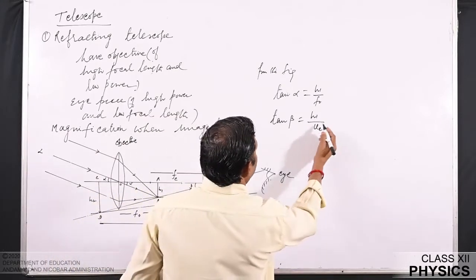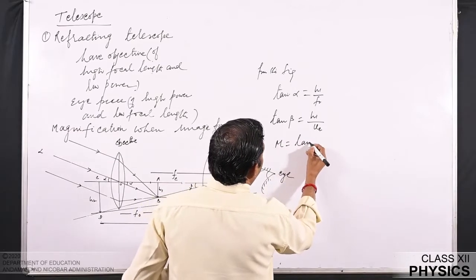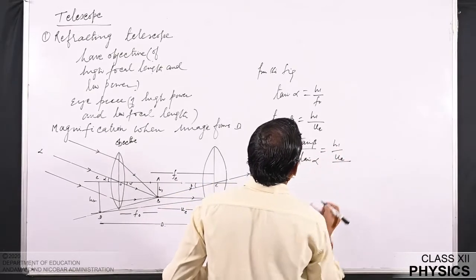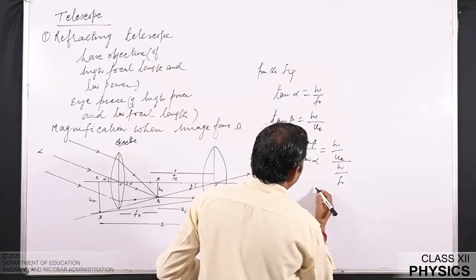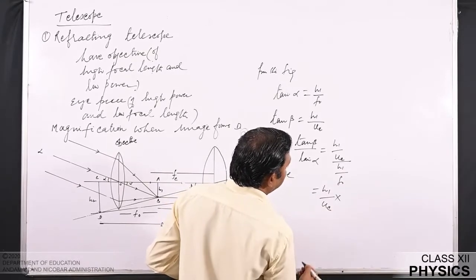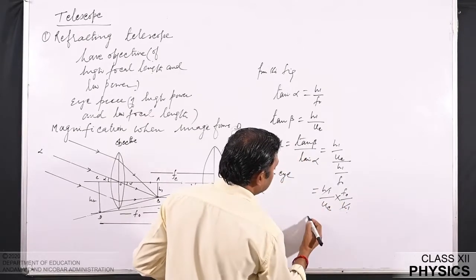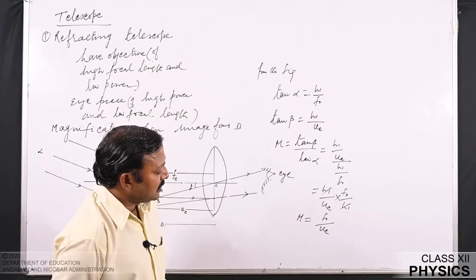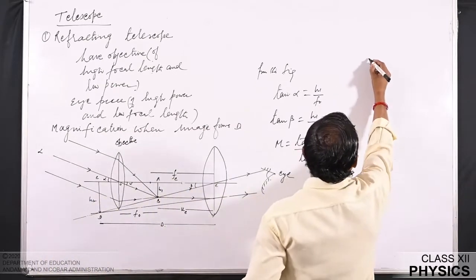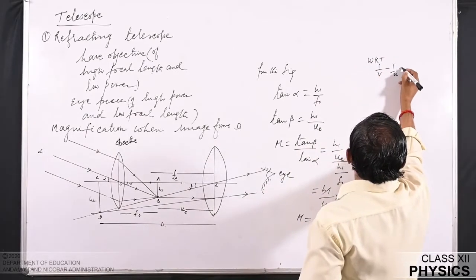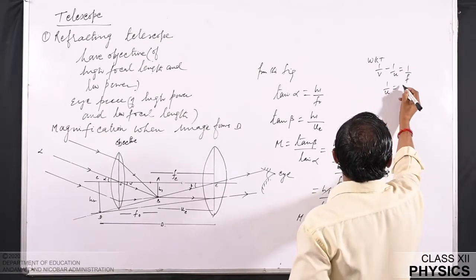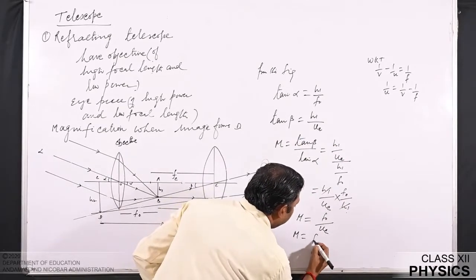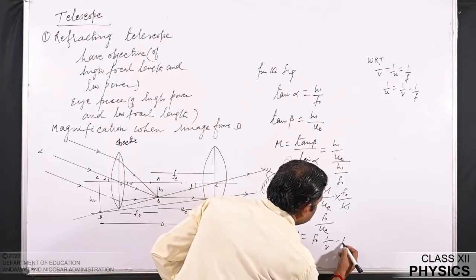Magnification M = tan β / tan α. So tan β = H1/Uₑ divided by tan α = H1/F₀. After rearranging, M = F₀/Uₑ. Further, we replace 1/Uₑ using the lens equation 1/V − 1/U = 1/F, giving 1/U = 1/V − 1/F. Substituting this gives M = F₀ × (1/Vₑ − 1/Fₑ).